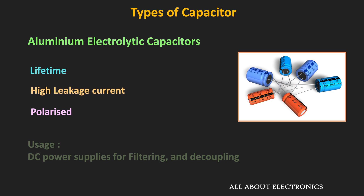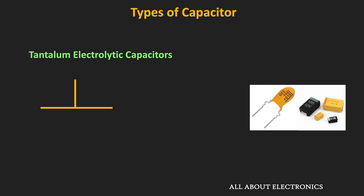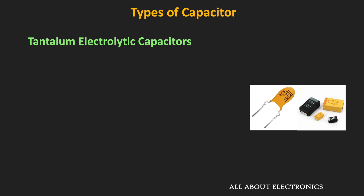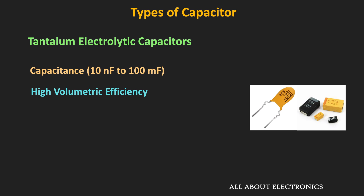Aluminum capacitors are used in DC power supply filtering and decoupling applications. The next very popular type of electrolytic capacitor is the tantalum capacitor. In tantalum capacitors, the tantalum metal is used as an electrode and a thin tantalum oxide is created on top, which acts as a dielectric. These capacitors are available in lead type as well as chip form for surface mounting, from nF to mF range. Due to higher relative permittivity, tantalum capacitors have higher volumetric efficiency than aluminum, meaning they are much smaller for the same capacitance and voltage rating.